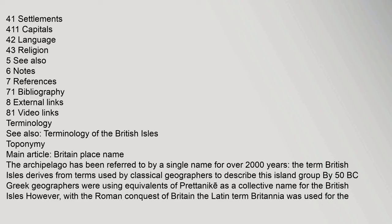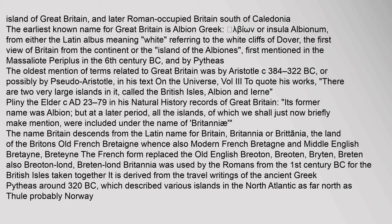Terminology. See also: Terminology of the British Isles. Toponymy: The archipelago has been referred to by a single name for over 2,000 years. The term British Isles derives from terms used by classical geographers to describe this island group. By 50 BC, Greek geographers were using equivalents of Pritnice as a collective name. With the Roman conquest of Britain, the Latin term Britannia was used for the island of Great Britain and later Roman-occupied Britain south of Caledonia.